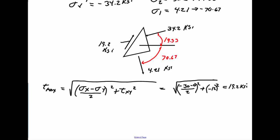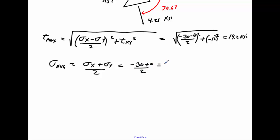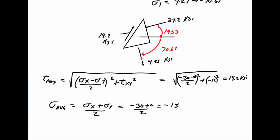The last thing is we can find average stress. The average is just the normal x plus normal y divided by 2. Running the values: negative 30 plus 0 divided by 2 gives you negative 15 KSI. Since it's negative, it goes back in, normal to the surface, at negative 15 KSI.